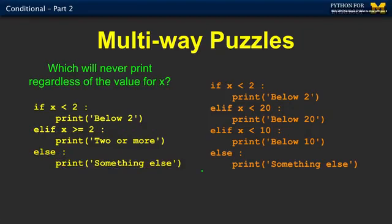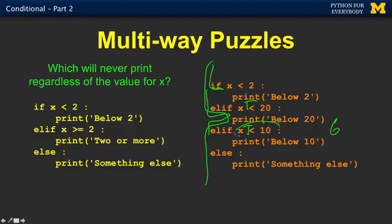In this next one, we have to remember that these things happen in order. So if x is less than 2, we're going to run this. If it's less than 20, we're going to run this. If it's less than 10, we're going to run this. But the problem is, all values of x that are less than 10, for which this would become true, this is always true. So a value like 6, this becomes true. So that means that if it's something like 6, it's going to run this and come out and never ask this question.